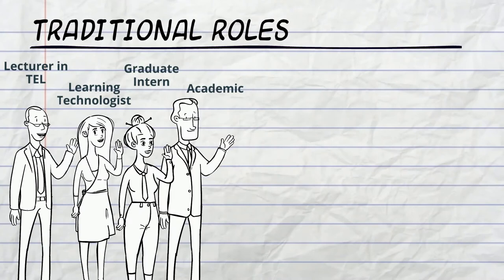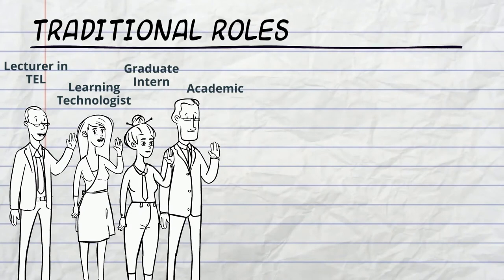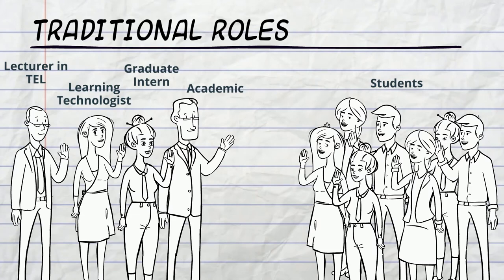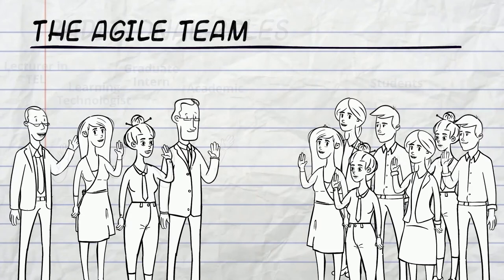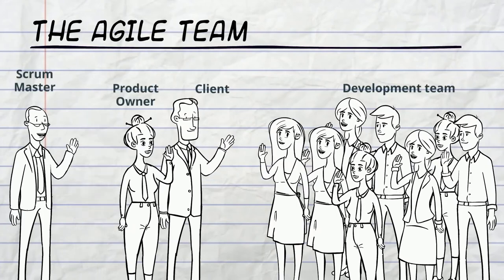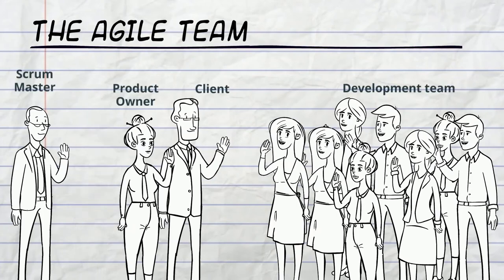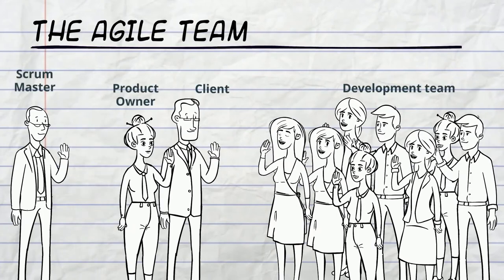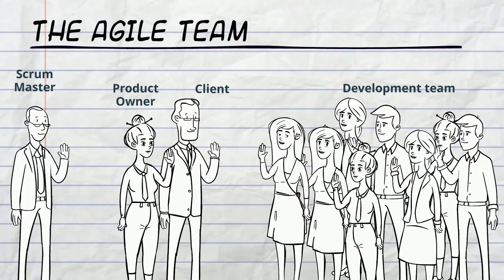The team consisted of a learning technologist, a lecturer, an academic, a graduate intern, and seven students. We moved from traditional to agile team roles to self-organise as a group, mix up roles, and create a non-hierarchical structure.